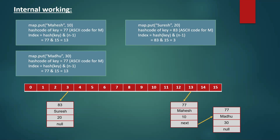In the same way, we read values from the HashMap. For example, map.get('Suresh'): the hash code 83 is calculated, and the index 83 & 15 = 3. It goes to index 3, and the key in that bucket is compared using the equals method with 'Suresh'. Since both are equal, the corresponding value 20 is returned. If the keys were not equal, null would be returned.